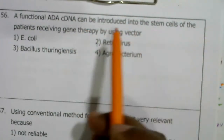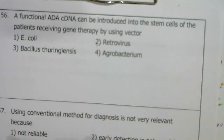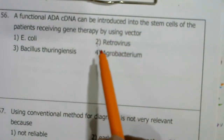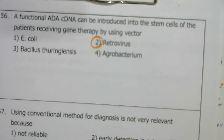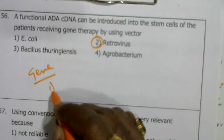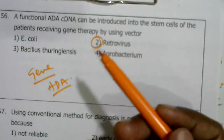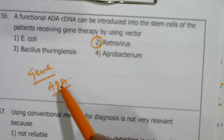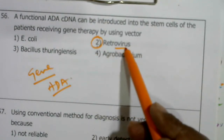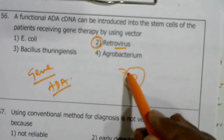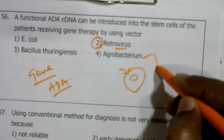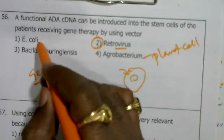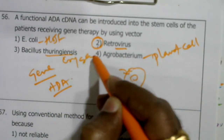A functional ADA cDNA can be introduced into the stem cells of a patient receiving gene therapy by using a vector — specifically retrovirus, which can infect human and animal cells rapidly, resulting in gene transfer. The ADA gene produced through reverse transcription as complementary DNA is inserted into the retrovirus vector, which then infects the patient's stem cells.